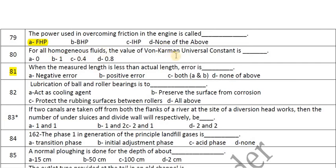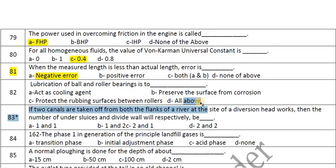The power used in overcoming friction in the engine is called frictional horsepower (FHP). For all homogeneous fluids, the value of von Kármán's universal constant is 0.4. When the measured length is less than the actual length, the error is negative. Lubrication of ball and roller bearings acts as a cooling agent, preserves surfaces from corrosion, and protects rubbing surfaces between rollers — all of the above.